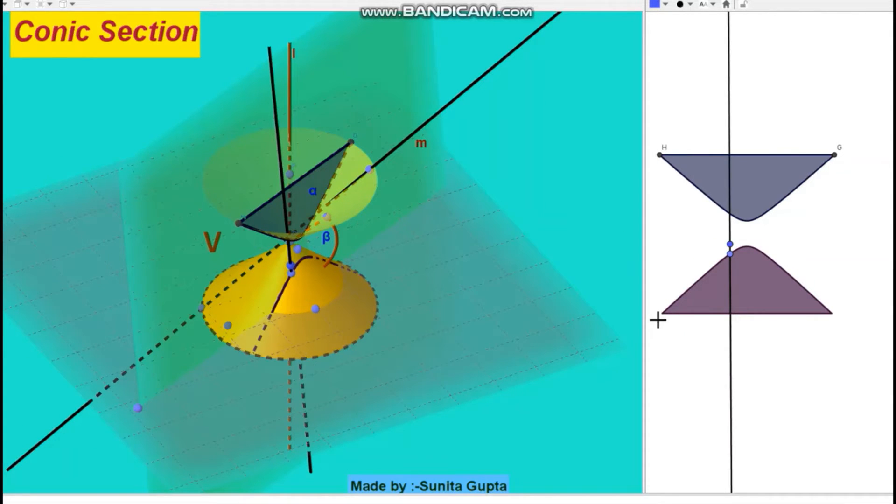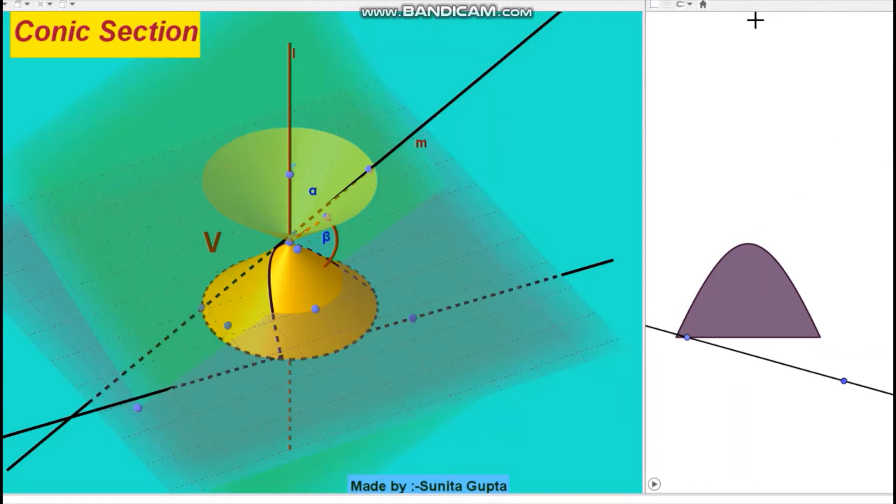When beta is less than alpha, the conic section is a hyperbola. When alpha equals beta, the conic section is a parabola.